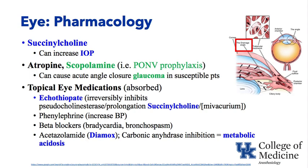Glaucoma can be of the angle closure variant among others. In angle closure, if you look at the angle separating the anterior and posterior chamber and the canal of Schlemm where fluid leaves, we want to keep that drainage angle open. If the iris is pulled back like a curtain — for example, in a dilated pupil that scopolamine or atropine could cause — the iris folds back and can obstruct that drainage angle, causing acute angle closure glaucoma in susceptible patients. So if someone has postoperative nausea and vomiting and also has glaucoma, it would be a bad idea to use a scopolamine patch postoperatively.